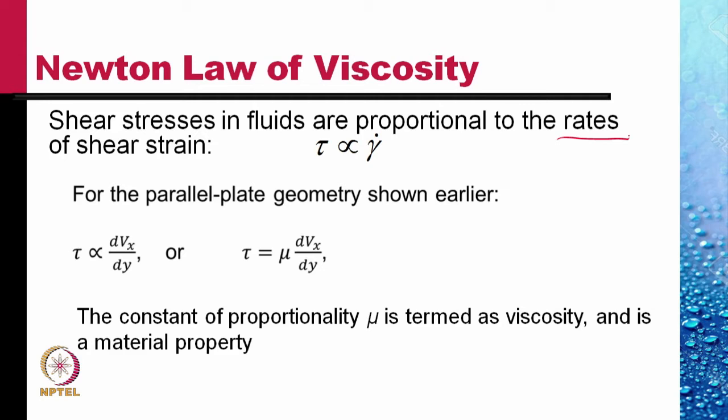Now this is a very famous relation, but the applicability of this is not universal. In fact, there are whole classes of fluids which do not obey this law. So the fluids that obey this law are called Newtonian fluids. Newtonian fluids are those fluids which obey the Newton law of viscosity with the constant mu. On the other hand, the fluids which do not obey this law are termed non-Newtonian fluids.